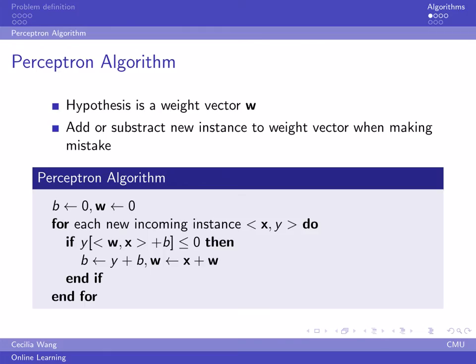Next, I will talk about several algorithms. A very natural one is perceptron. We have a hypothesis as a weight vector that is a linear combination of the previous instances.